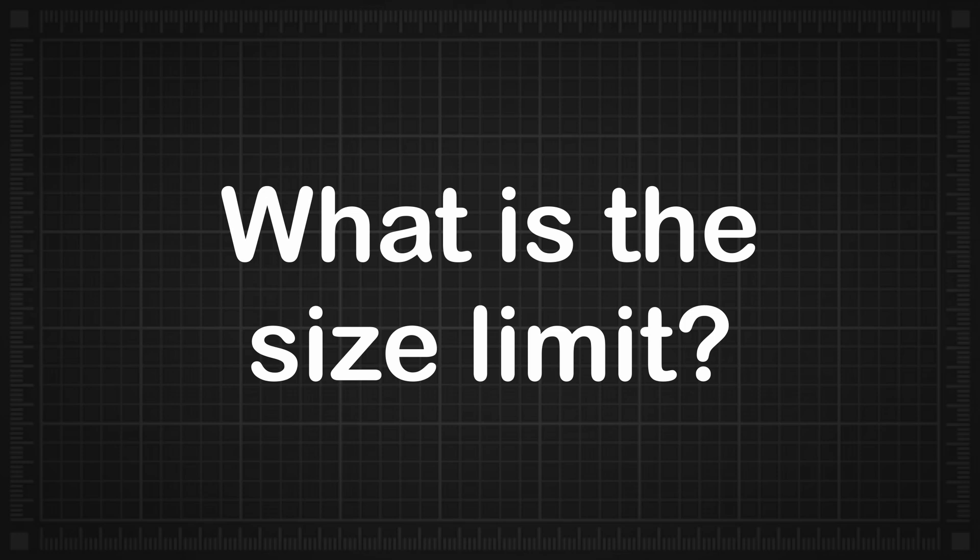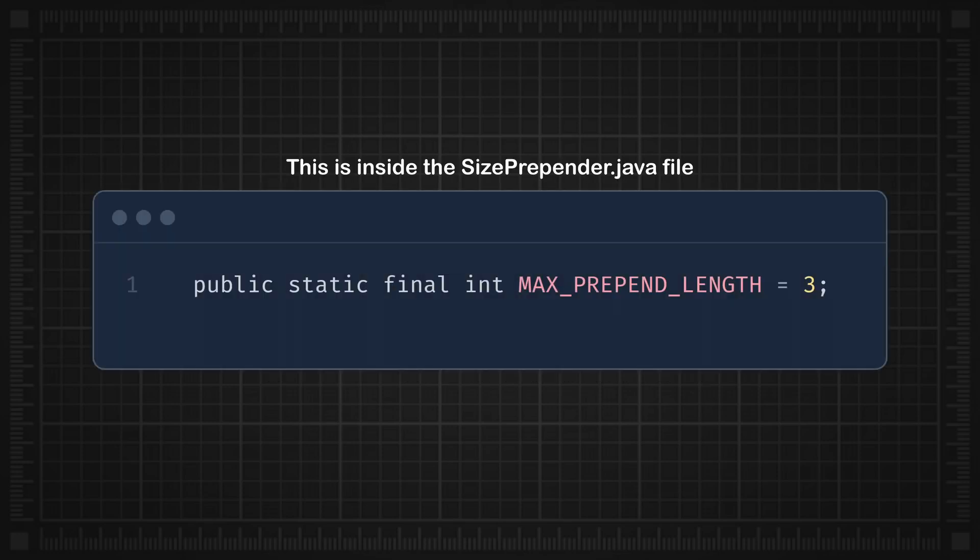Now what is the size limit on the packet and how is it set? As you can see, there is a constant which defines the maximum length of the size information, in bytes, that can be added to the packet. In this case, it is 3 bytes.